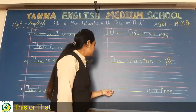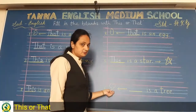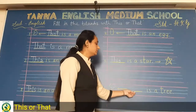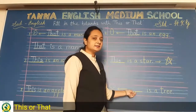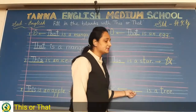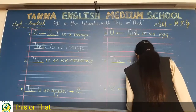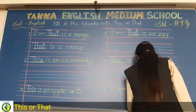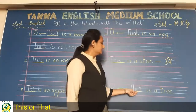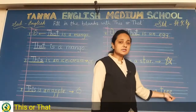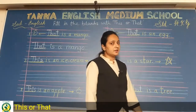Now there is a tree. Look, this is a tree, and it has a long arrow. So what will come here? 'That.' T-H-A-T, that. Read it as: 'That is a tree.'